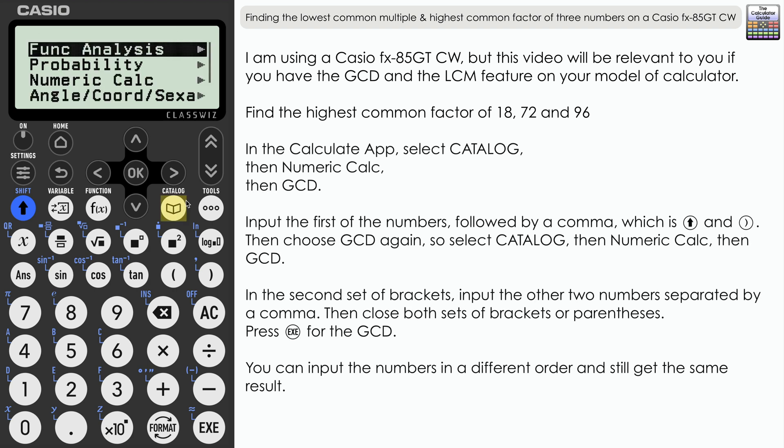We need to find the GCD or HCF of this, so it's Numeric Calc, GCD, and once again it's a very similar setup. Let's input the first number, 18, and then press comma. Then GCD once more: Catalog, Numeric Calc, and GCD. And then the other two numbers separated by comma: 72 and 96.